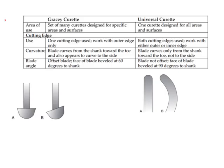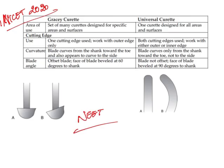This is an important question — it was asked in the INICET 2020 examination, and has also been asked many times in INICET exams. It is important that the student knows the difference between Gracey curettes and universal curettes. Gracey curettes are area-specific, whereas a universal curette is a single curette used for all surfaces.